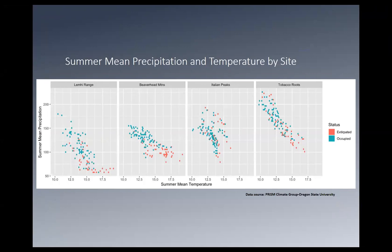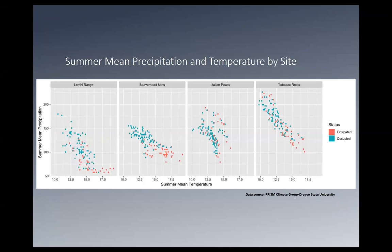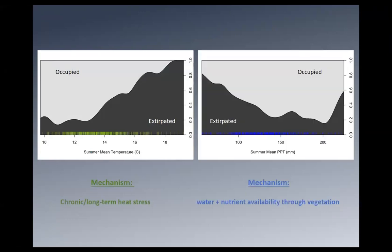This is a conditional density plot — the probability of a patch being occupied given some condition. As summer mean temperature increases, you're more likely to be extirpated. With precipitation, as you get more, you're more likely to be occupied — until you reach some threshold where you become more likely to be extirpated again, which might represent those high elevation, severe conditions that are really cold and really wet in summertime. The mechanisms behind these are that summer temperatures might cause chronic heat stress, while precipitation might affect water and nutrient availability through vegetation locally around the patch.